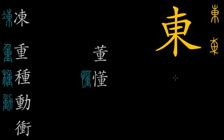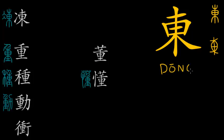Hello everyone and welcome to my next video about Chinese character etymology and phonetic series. In this video I'm going to talk about a phonetic series where the leading phonetic element is 东 (dōng), which means 'east', pronounced in the first tone.